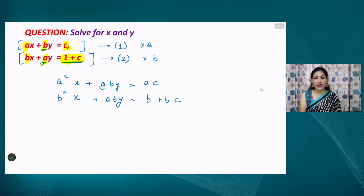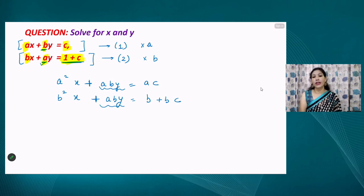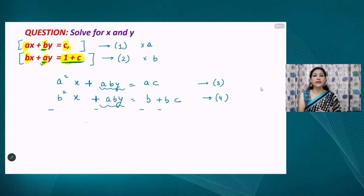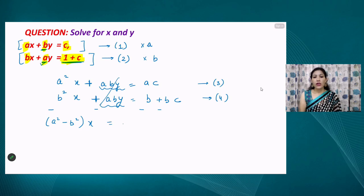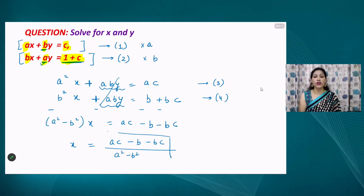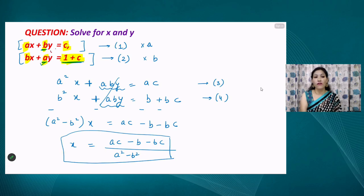The terms 'aby' in both equations are equal with the same sign, so we subtract equation four from equation three. All signs change for the subtracted equation: we get (a² − b²)x = ac − bc. As a result, x = (ac − bc) / (a² − b²). This is the value of our first variable x. Now we need to find the value of y.